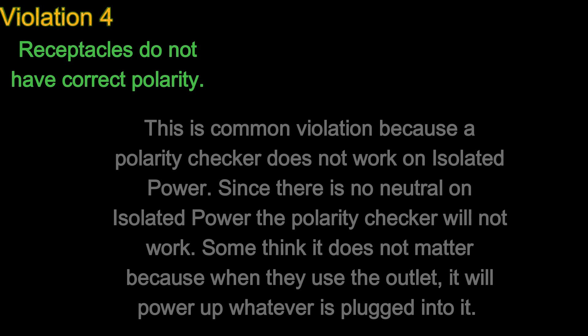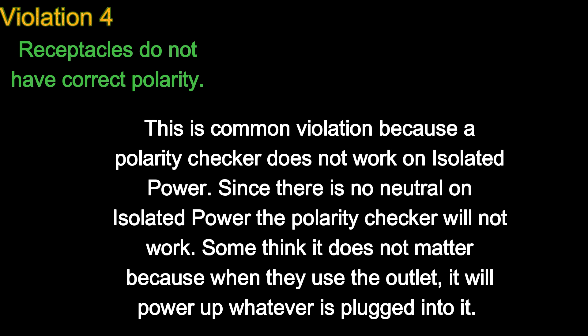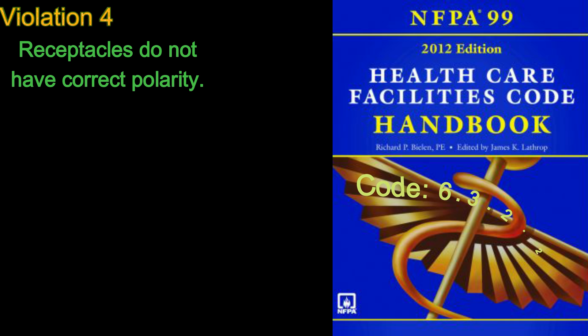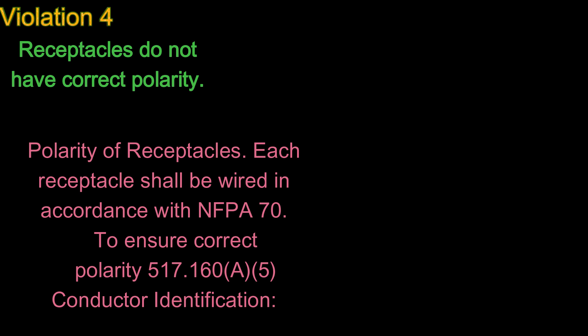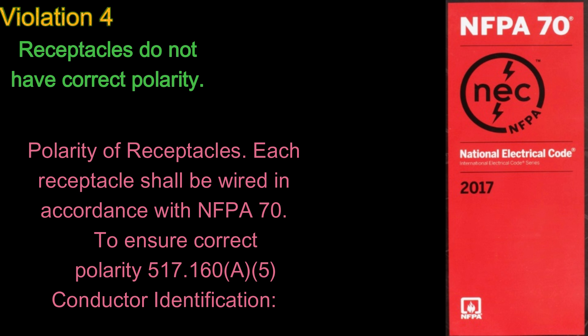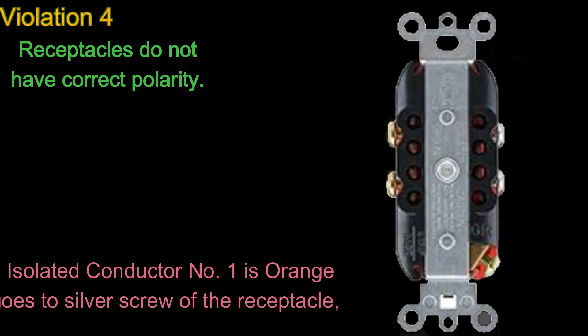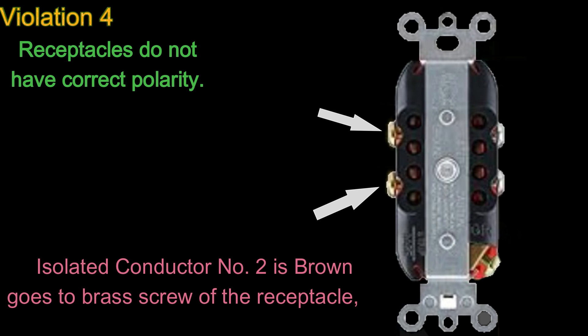Number 4: Receptacles do not have correct polarity. This is a common violation because a polarity checker does not work on isolated power — since there is no neutral on isolated power, the polarity checker will not work. Some think it does not matter because the outlet will power up whatever is plugged into it. Code 6.3.2.2.2.6.3 Polarity of receptacles states each receptacle shall be wired in accordance with NFPA 70. To ensure correct polarity per 517.160 A-5, conductor identification is as follows: isolated conductor number 1 is orange and goes to the silver screw of the receptacle; isolated conductor number 2 is brown and goes to the brass screw of the receptacle.